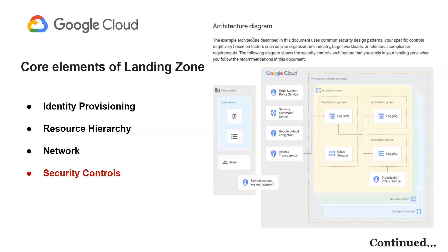The fourth core element is security controls. Security controls includes creating security policies and rules, firewall rules, and access controls. Having a well-defined security strategy ensures the security of your GCP environment.